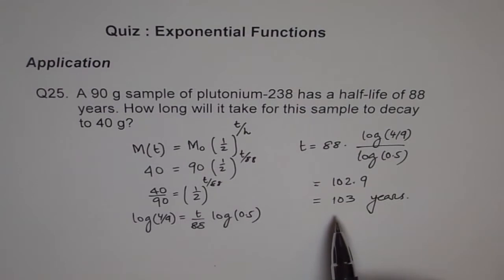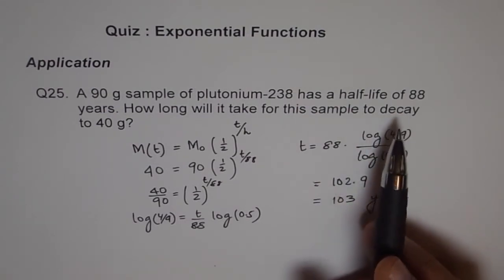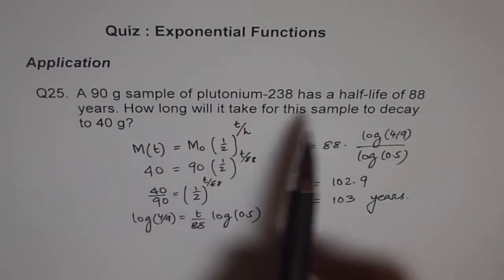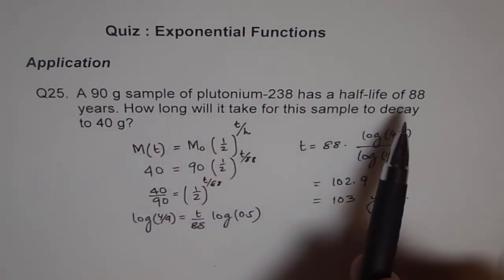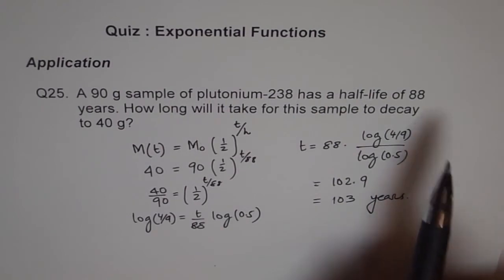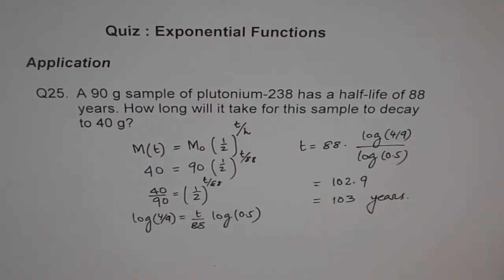As I said, you can estimate, and to estimate, you should try with numbers. After 88, it will be from 90 to 45. So it has to be more than 80. Then you can try numbers like 100, and then you'll come closer and closer and get your answer.